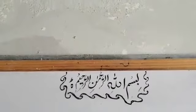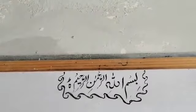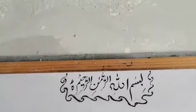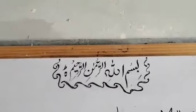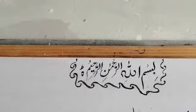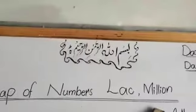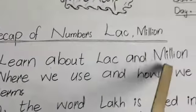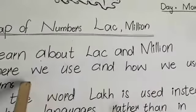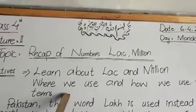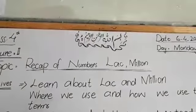Assalamu alaikum students. Today we are going to start our second lecture in Class 4. Our topic is the place value of numbers — lakh and million. The objective of this topic is to learn about lakh and million, where we use them and how we use these terms. In this topic we will learn how we use lakh and million in our daily lives.